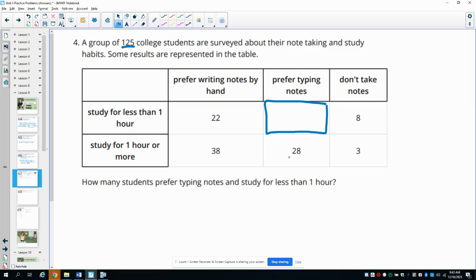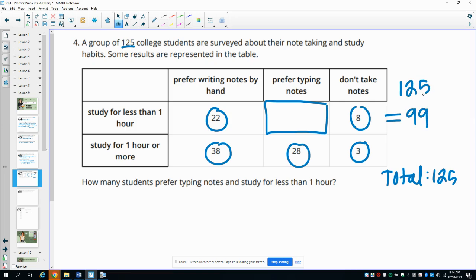And there's only one or the other option. So these have to total 125. And then they just looked at each of the ways that they take notes. So writing them by hand or typing them or they don't take them. And so if we total up all these other ones, so if we just add these all together, those equal 99. So then we would just need to do 125 minus 99 to find out that there are 26 more students that need to be represented. So they must be the ones that prefer typing their notes and studying for less than an hour.